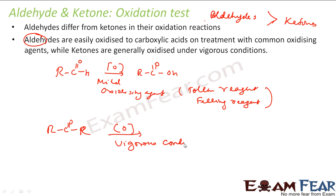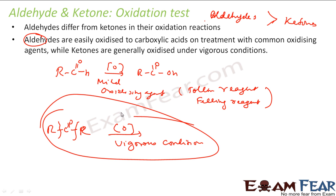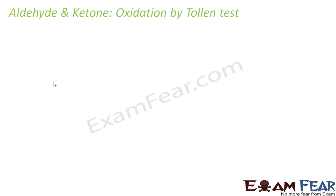Under vigorous conditions — using strong oxidizing agents, high temperature, and high pressure — ketones get oxidized because you have to break C–C bonds, giving RCOOH and a smaller acid. But aldehydes oxidize pretty easily. Thus there are two tests — Tollen's test and Fehling's test — to differentiate between aldehydes and ketones.